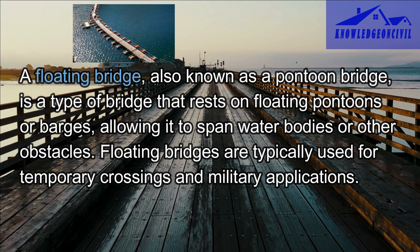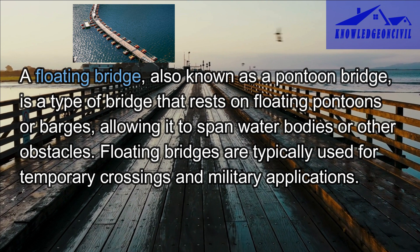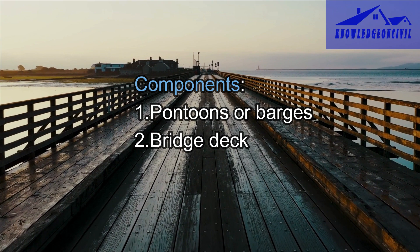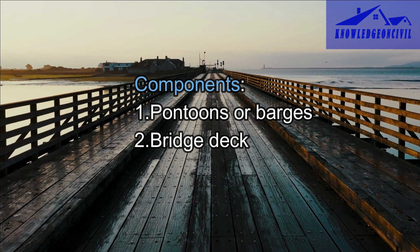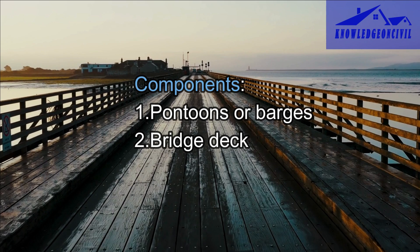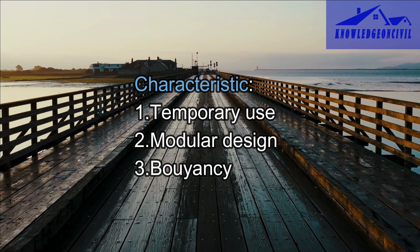A floating bridge, also known as a pontoon bridge, is a type of bridge that rests on floating pontoons or barges, allowing it to span water bodies or other obstacles. Floating bridges rely on a series of pontoons or barges — buoyant platforms that float on water — which are linked together to create a continuous surface for the bridge deck. The bridge deck, which carries vehicles, pedestrians, or other loads, is placed on top of the pontoons and can be constructed using materials like steel, wood, or other suitable materials.